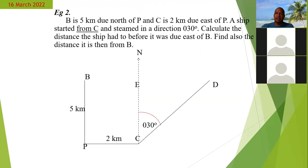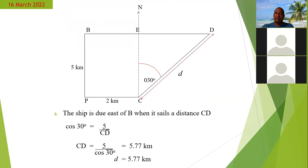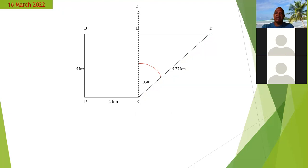Now, if we go back to the question, the other part of the question says calculate the distance the ship had to go before it was due east of B. Now it said, find also the distance it is then from B. So now what you really want now is that distance from B to D. After we have calculated CD, now we need to calculate the distance BD.